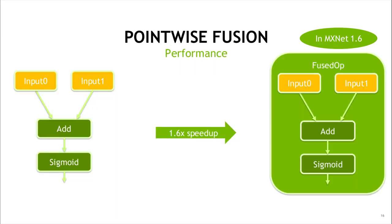As we can imagine, because in our fused kernel we never actually write the result of the addition to main memory, we do get a speedup from the eliminated memory passes. In our example, the original case had five memory transactions — three loads and two stores — and the fused result has only three memory transactions — two loads and one store — so we observe a 1.6x speedup.